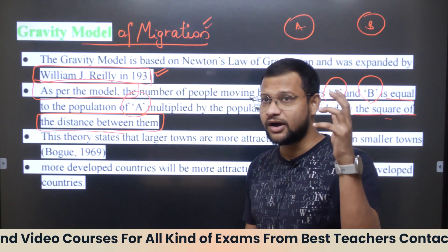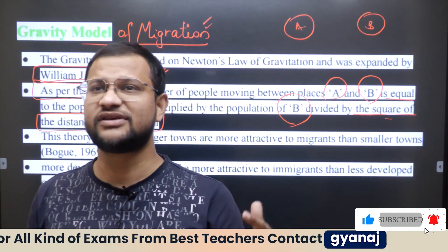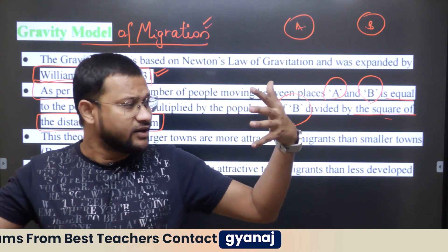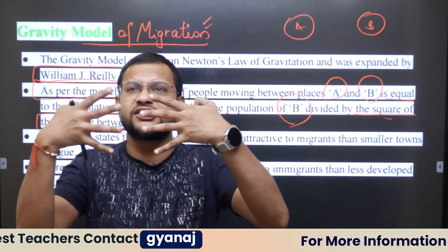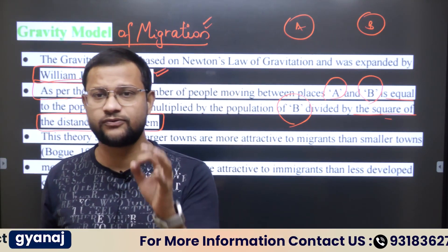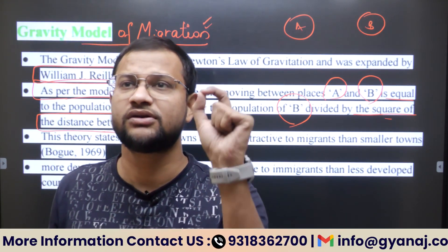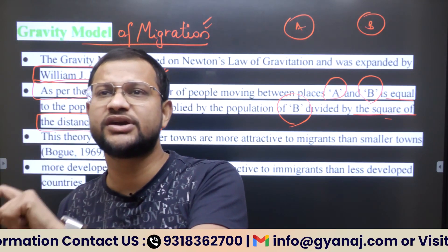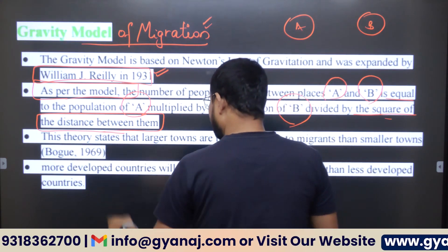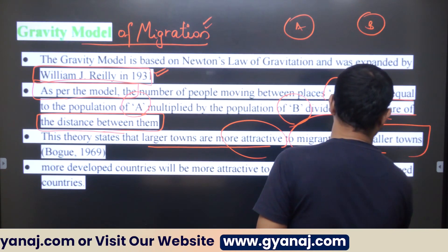Do you find any resemblance with Newton's law of gravity? Just as Newton imagined gravitational force, there is a kind of migrational force that exists between two cities. This force is the determinant of a migration wave from one region to another. The theory states that larger towns are more attractive to migrants than smaller towns.